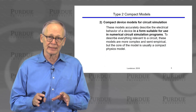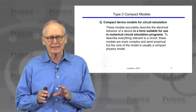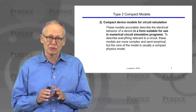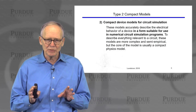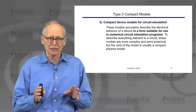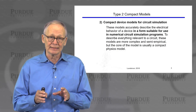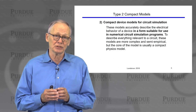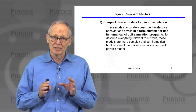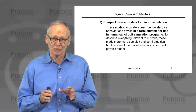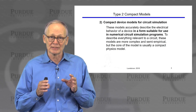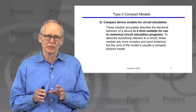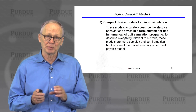There's another kind of compact model: compact models for circuit simulation. These accurately describe the electrical performance of a device across a wide range of temperatures, biases, and layout geometries, in a form suitable for numerical circuit simulation programs so that designers can design complex electronic circuits. The model does not need to be physical — it could be a set of empirical parameters — but we generally prefer the core to be a physical model.